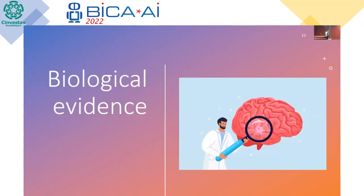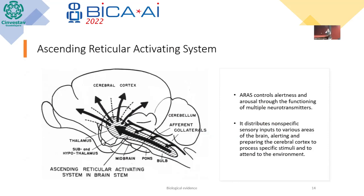In the biological evidence, we can see that the ascending reticular activating system (ARAS) controls alertness and arousal through the functioning of multiple neurotransmitters. In the image, we can see the areas involved in this process. The ARAS distributes non-specific sensory inputs to various areas of the brain, alerting and preparing the cerebral cortex to process specific stimuli to attend to in the environment.